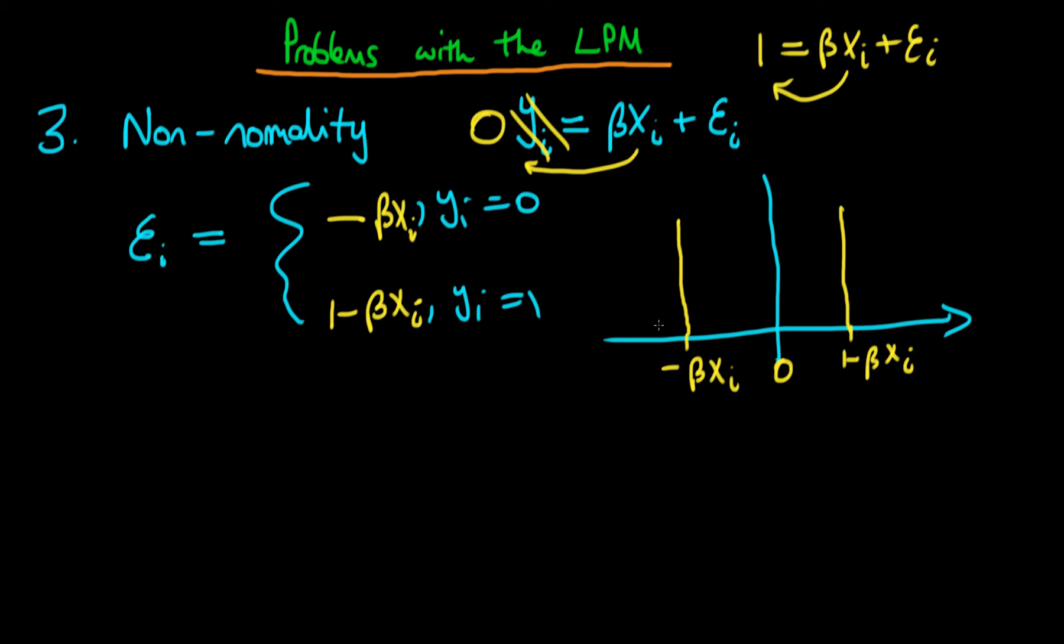But note that this is a discrete distribution. There are only two values which epsilon i can take on. Whereas what we normally require of our errors is that they be normally distributed, or at least in small samples, because that allows us to do small sample inference.